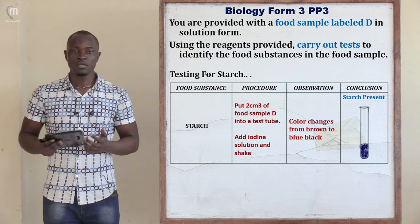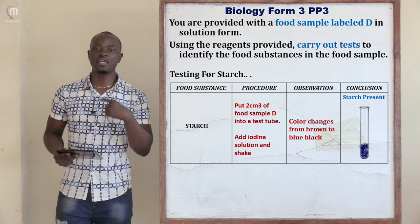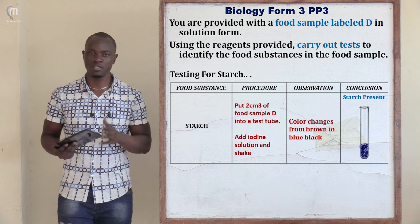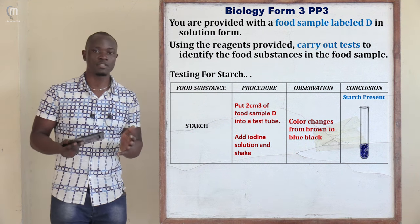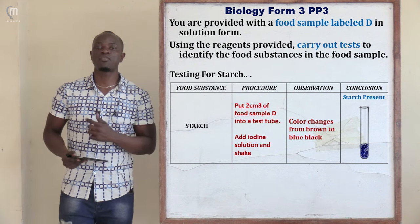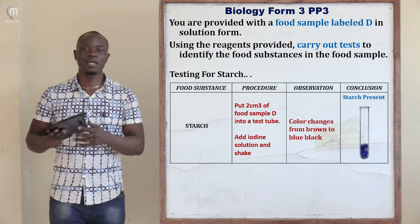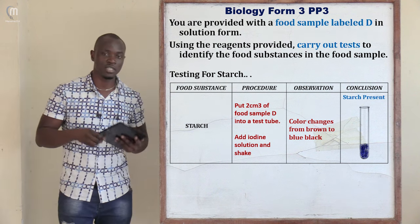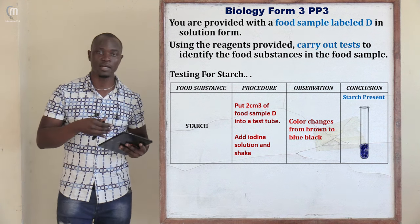For all color changes — whether for Benedict's solution, copper 2 sulfate solution, or iodine solution — you must identify both the initial color and the final color. Don't just say the substance changed color; specify which reagent changed. For iodine: brown to blue-black. For Benedict's: blue to green, yellow, then brown. For copper 2 sulfate: the blue color persisted or did not change. Always state initial and final color to get full marks.